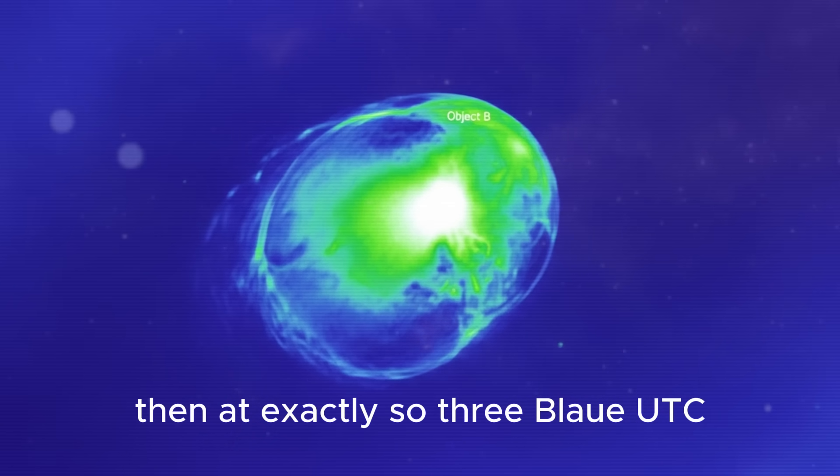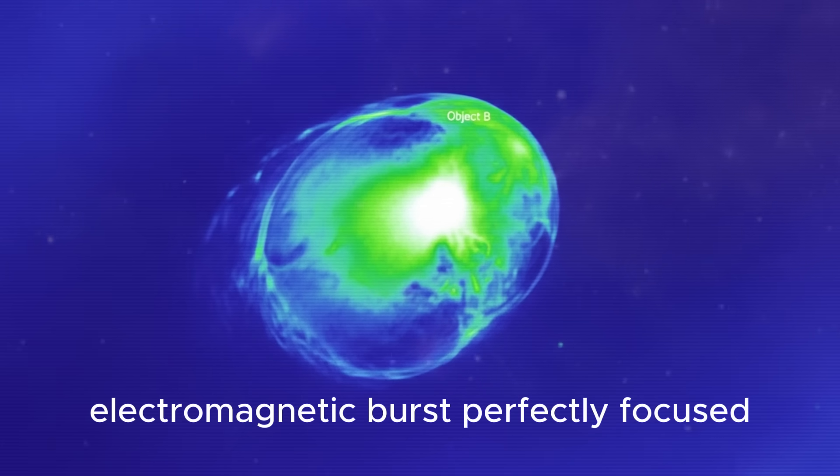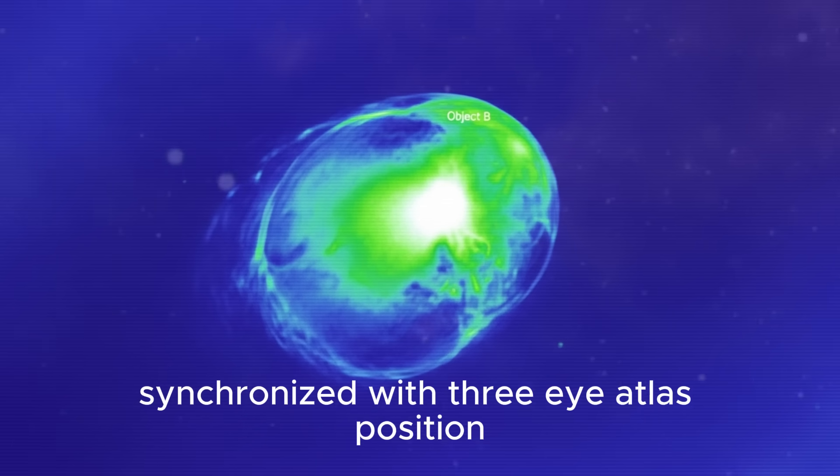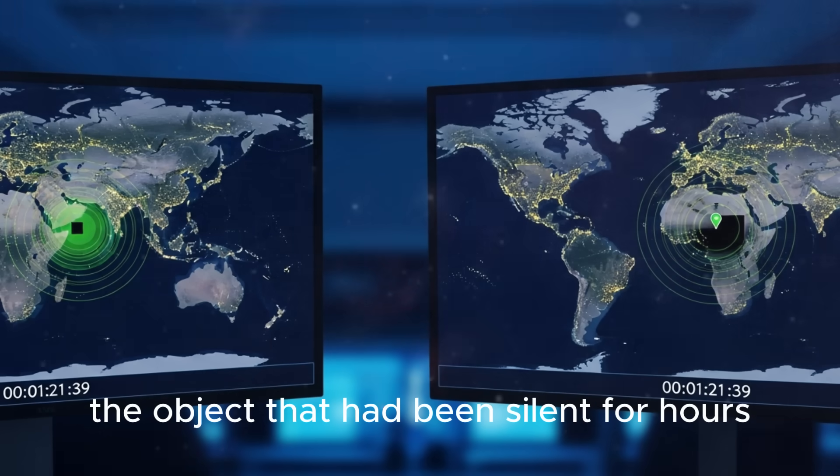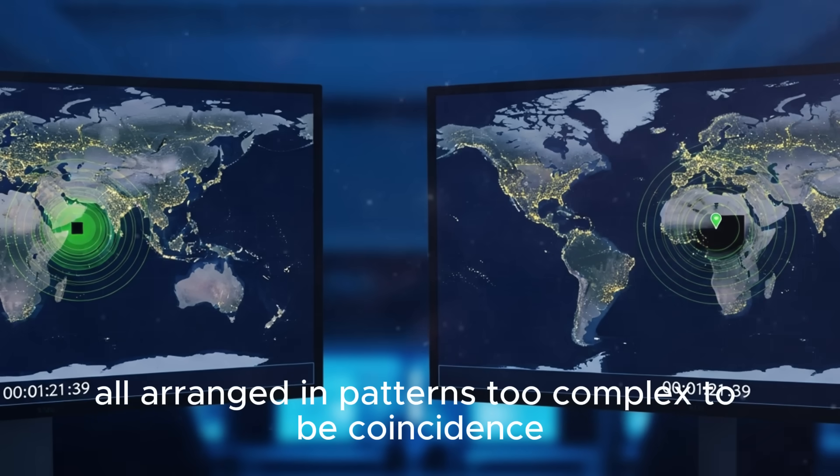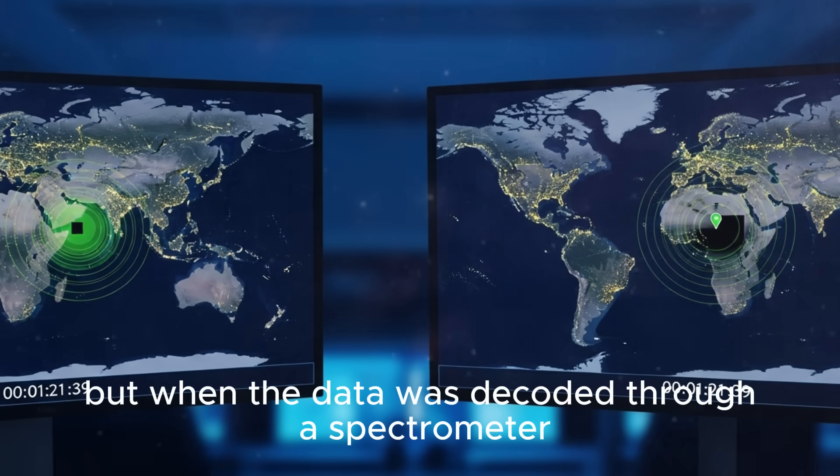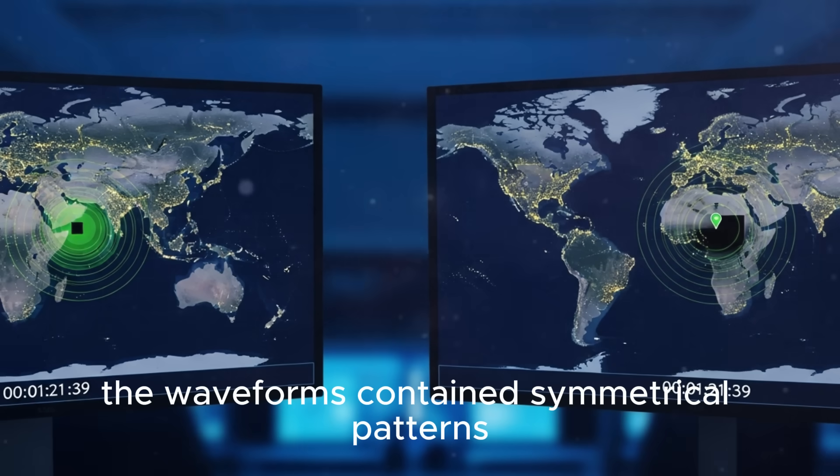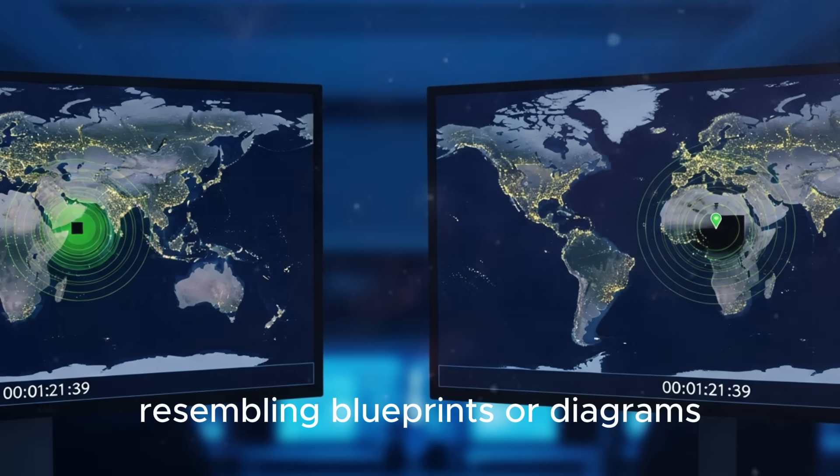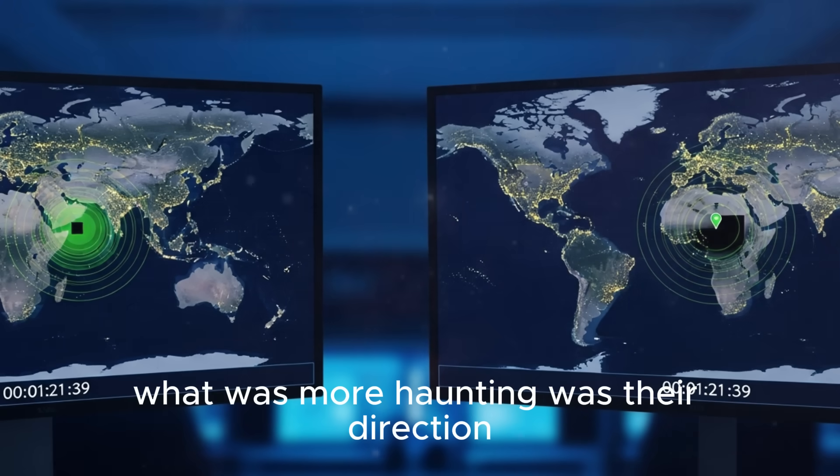Then at exactly 0300 hours UTC, everything changed. Every major radio telescope on Earth detected a massive electromagnetic burst perfectly focused, synchronized with 3I/ATLAS position. The object that had been silent for hours suddenly came alive, emitting pulses across multiple frequencies - gamma rays, microwaves, X-rays, all arranged in patterns too complex to be coincidence. When the data was decoded through a spectrometer, the waveforms contained symmetrical patterns resembling blueprints or diagrams.